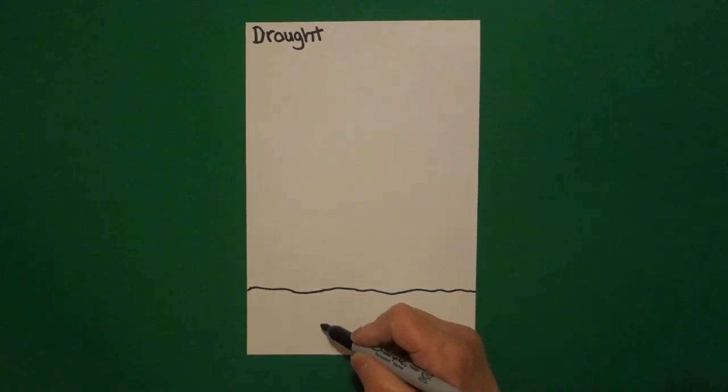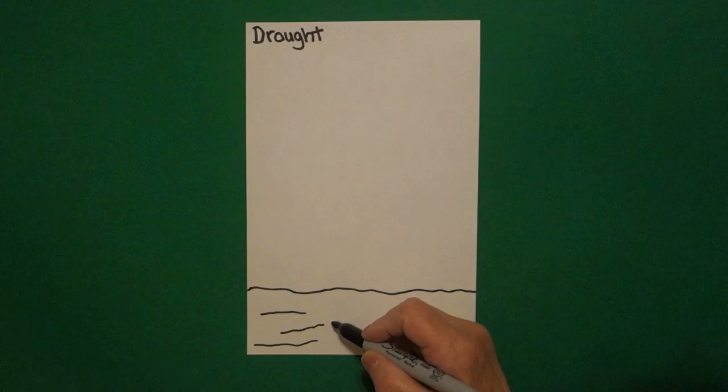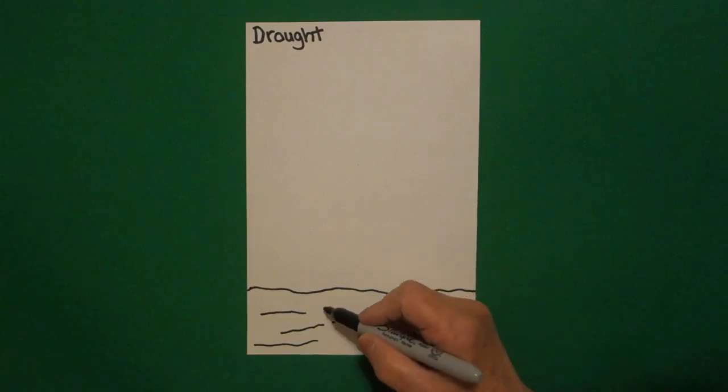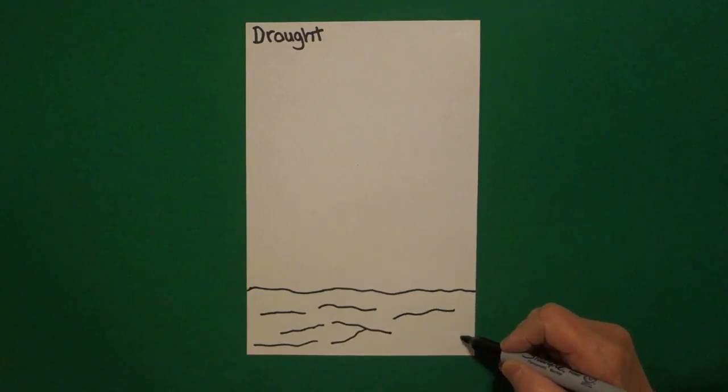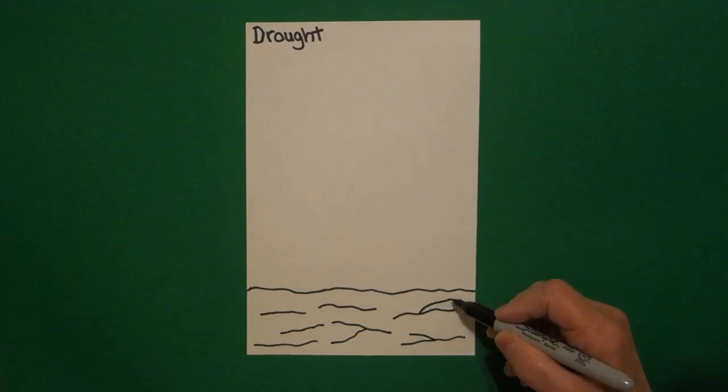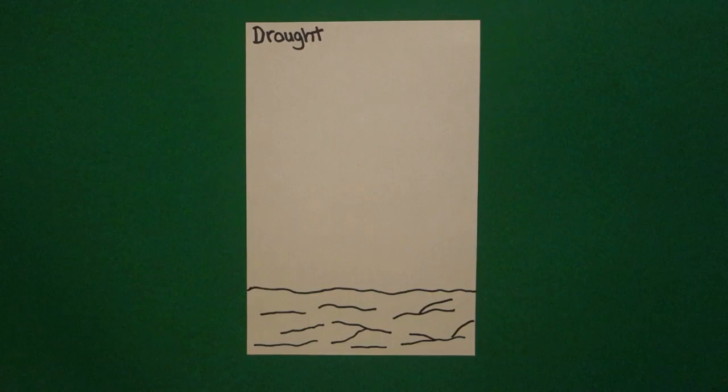And inside this space I'm going to draw some wavy lines that's supposed to represent dried out riverbeds, creeks, and just the general land with no water. Because that's what a drought is. It's no water. So this is all dry, parched land.